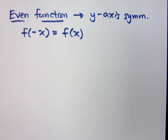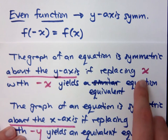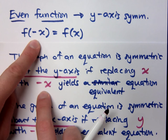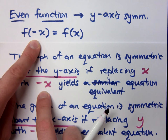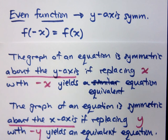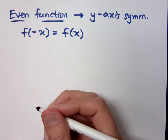Think about what we said about y-axis symmetry. For y-axis symmetry, if I replace x with negative x, they should be the same. So when you do that in a function setting, you have y-axis symmetry, and that means you have an even function.